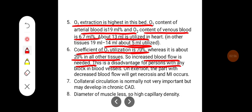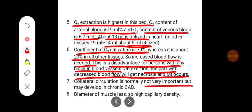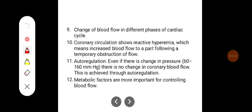This is a disadvantage for persons with any block in the blood vessels, as on exertion the part with decreased blood flow will get necrosis. Collateral circulation is normally not very important but may develop in chronic coronary artery disease. The diameter of the muscle fibers is small, resulting in high capillary density.